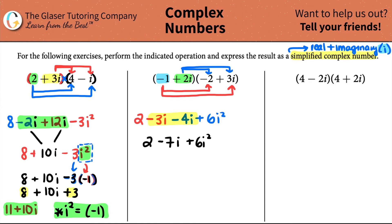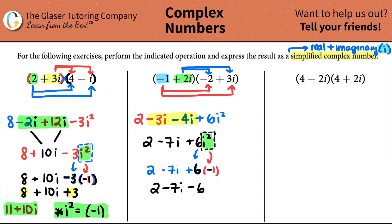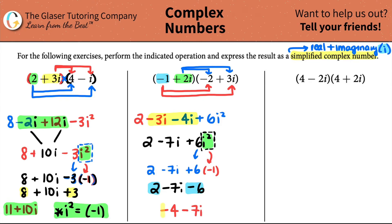We still want it in simplified complex form, and i squared is not allowed. Remember, i squared equals negative one. So six i squared becomes six times negative one, which is negative six. That gives us two minus seven i minus six. Now grouping the real parts: two minus six is negative four. The real number must come in front, so the final answer is negative four minus seven i.